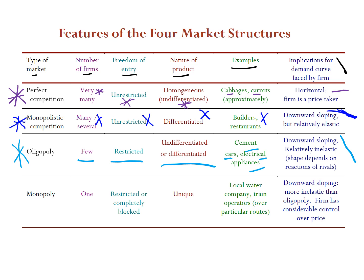The final market type is monopoly — you may have heard of it or even played the board game. Here there is just one firm selling to everybody. Freedom of entry is very restricted — it's extremely hard for anyone else to get in, due to tough government legislation or very high capital requirements.